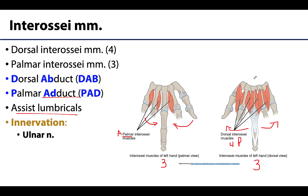We're specifically talking about digits two through four, as the first and fifth digits have their own muscles. A helpful mnemonic is DAB and PAD: Dorsal interossei ABduct and Palmar interossei ADduct — toward or away from that third digit. Like most intrinsic muscles of the hand, the interossei are innervated by the ulnar nerve.